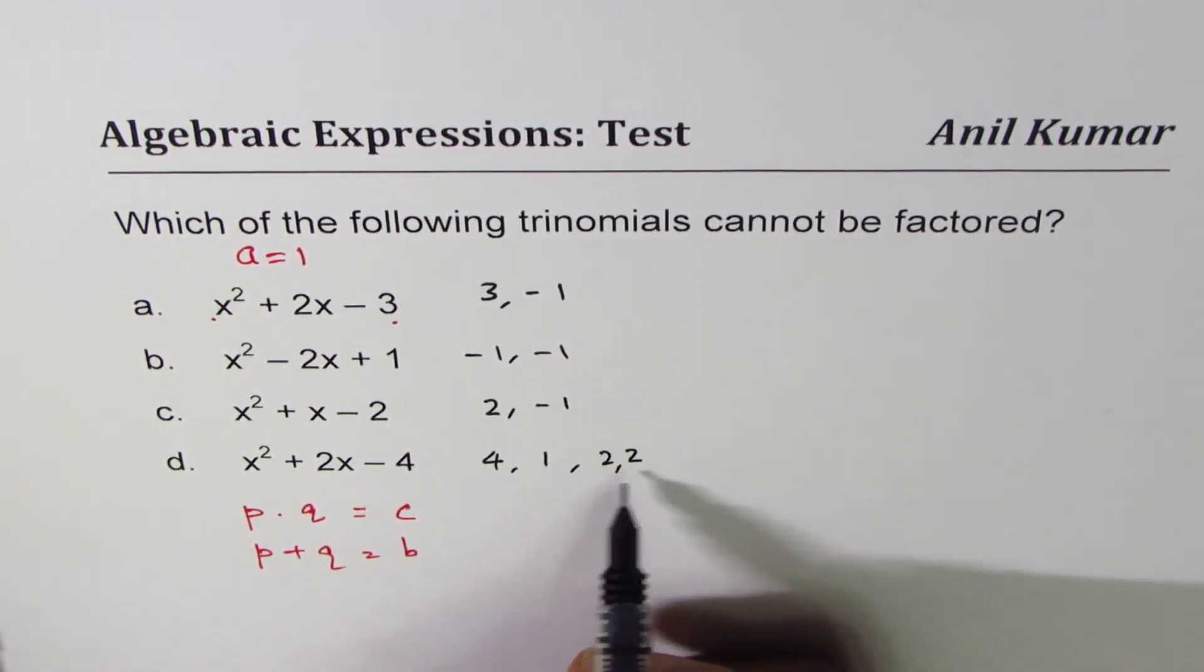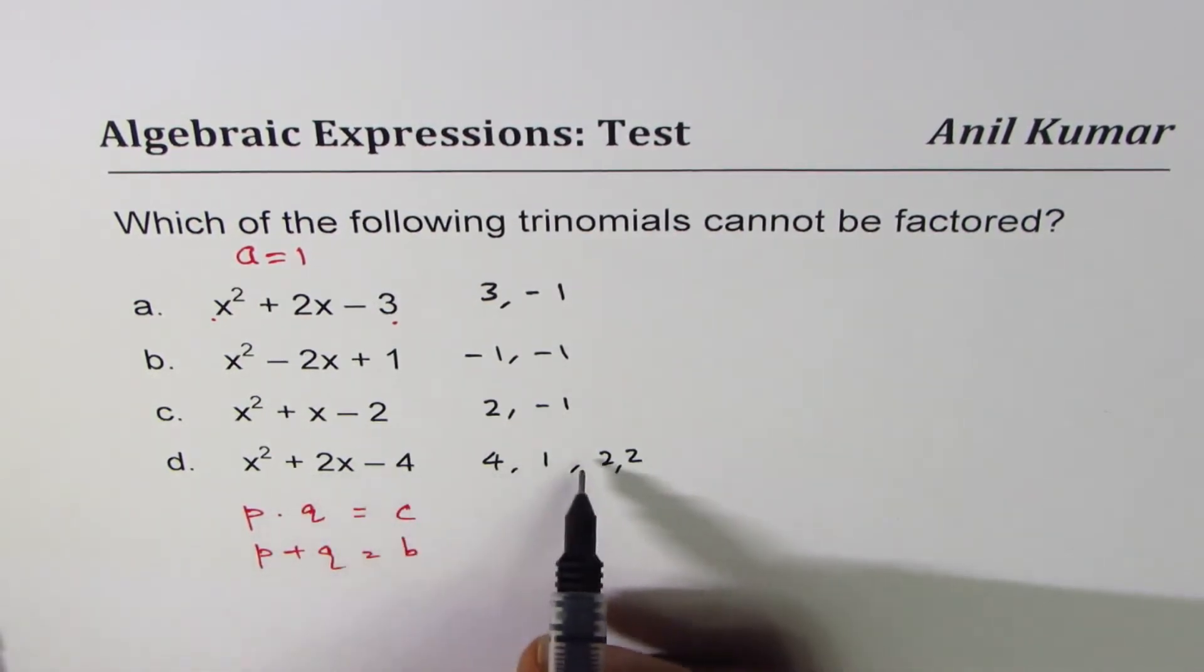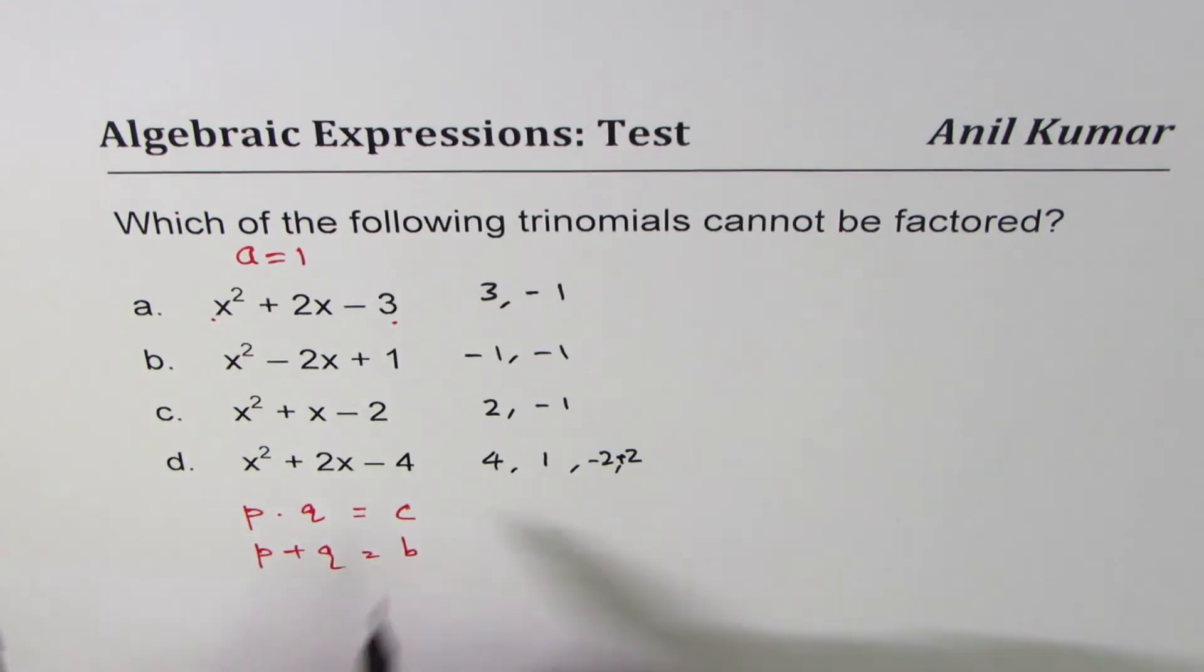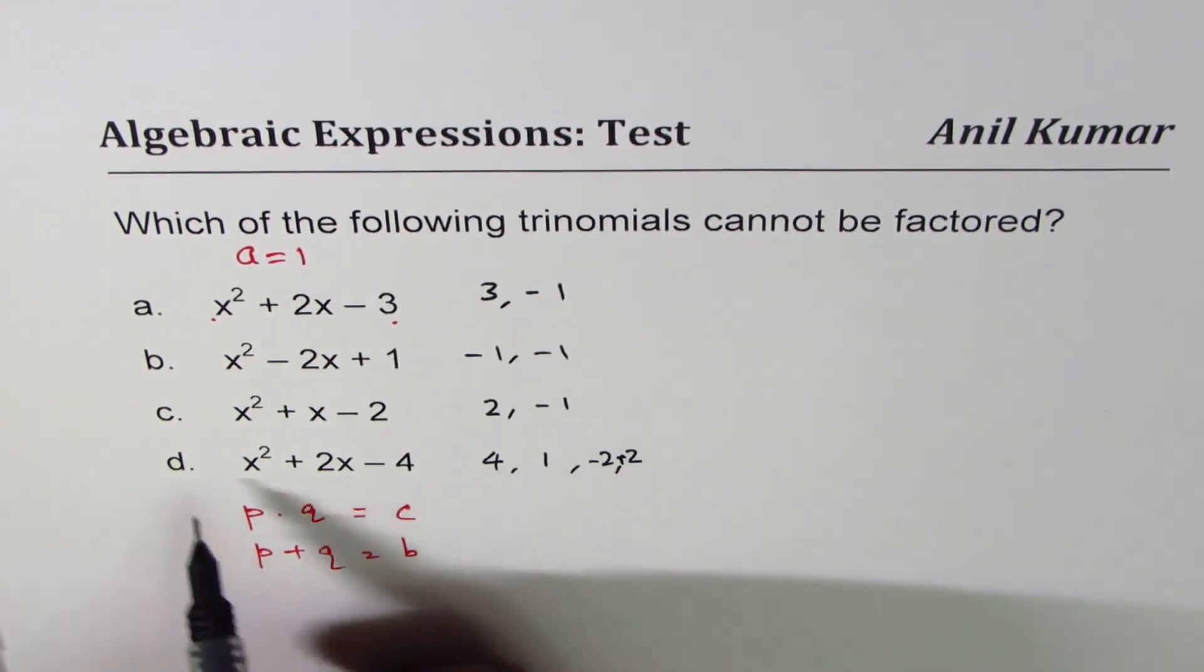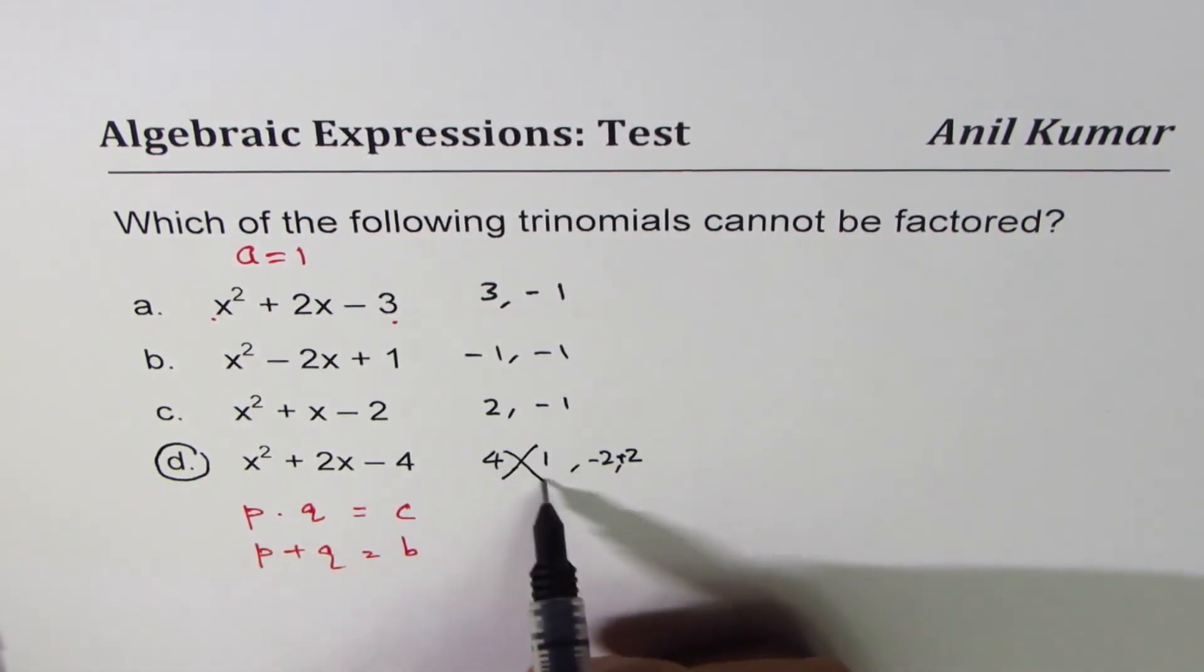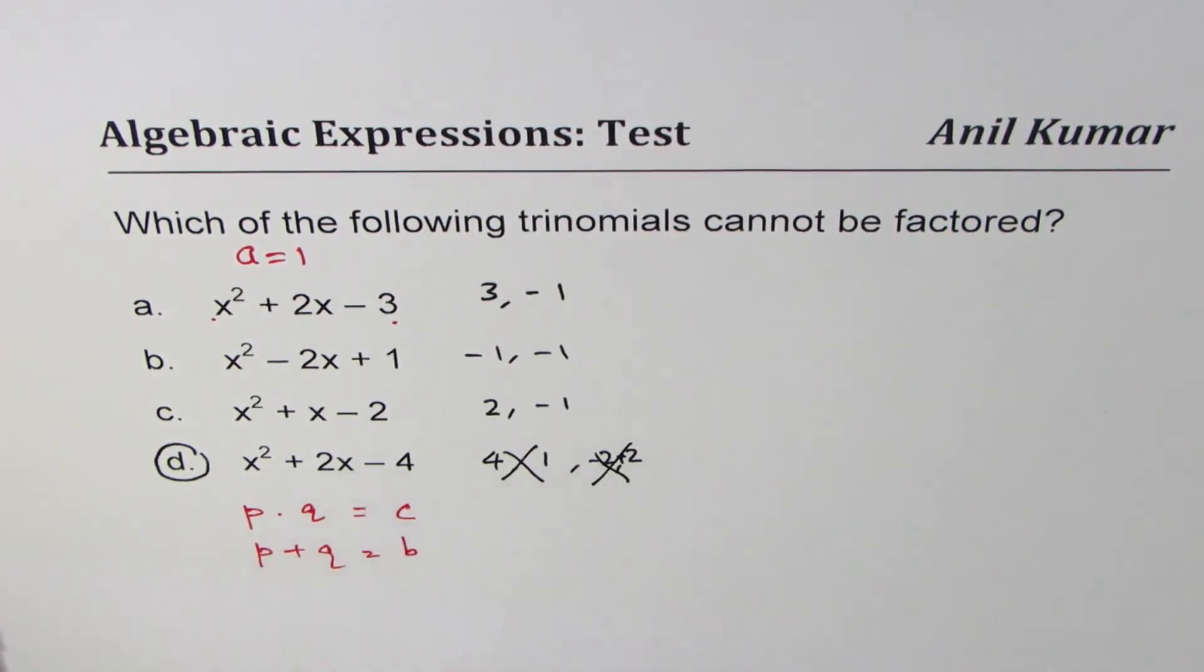For minus 4, the combinations are 4 and 1, or 2 and 2. These cannot give you the right sum. If we use 2 and minus 2, the sum will be 0, and that doesn't work. So this is the option since they cannot work out with the required product and sum.